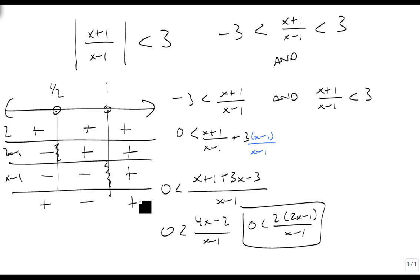So this goes positive, negative, positive. And we want to know when it's bigger than 0, so that's from here to here: from -∞ to 1/2 union 1 to ∞.